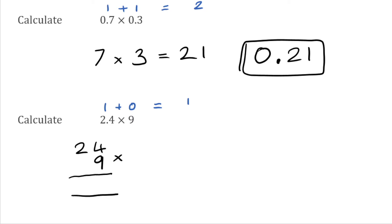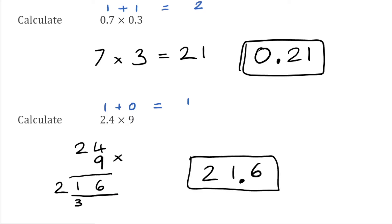Going through: 9 multiplied by 4 is 36, so we've got 6 carry the 3. Then 9 times 2 is 18, add the 3 is 21. So to begin with we've got 216. But we know our answer is going to be to one decimal place, so going back to 216, the decimal goes in the middle, which means the answer is 21.6.